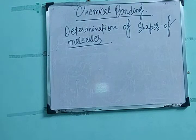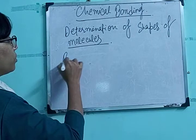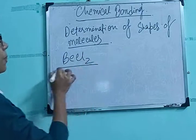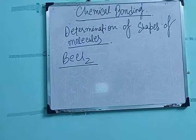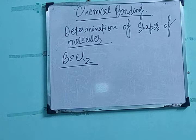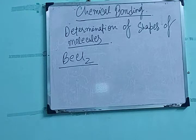So, determination of shapes of molecules — starting with the simplest molecule, beryllium dichloride (BeCl₂). Its shape is given. This molecule is linear in shape. But suppose we don't know the structure or shape of a molecule — how can we predict it using VSEPR theory? We can predict the shapes and geometry of any molecule if we know the VSEPR theory.